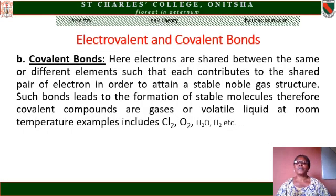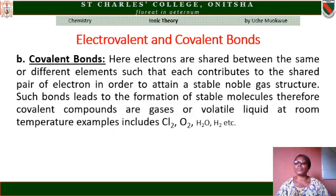Covalent bond. In covalent bond formation, electrons are shared between the same or different elements such that each contributes to the shared pair of electrons in order to attain a noble gas structure. Such a bond leads to the formation of stable molecules. Therefore, covalent compounds are gases or volatile liquids at room temperature. Examples include chlorine molecule, oxygen molecule, hydrogen molecule, and so on.